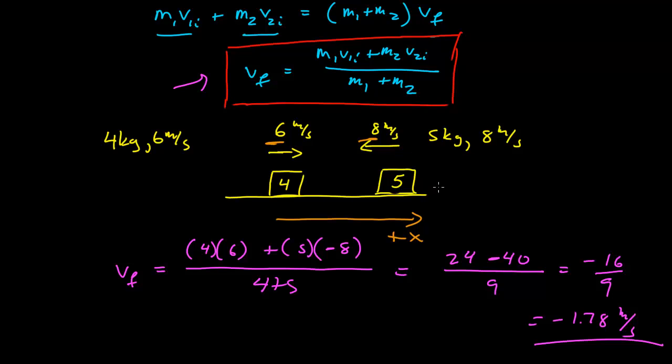Well, this mass right here certainly had the larger momentum. It's heavier and has a larger speed. So its magnitude of the momentum is larger. So it makes sense that the result would then be going in that direction, in the negative x direction.